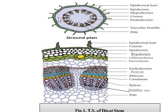The vascular bundles in the case of dicot are conjoint and collateral. Conjoint means xylem and phloem are both present at the same radius. Collateral means your phloem lies towards the outer side and the xylem is on the inner side. The ring-like structures you see are the xylem complex tissue. So in this case, the vascular bundle is conjoint and collateral.